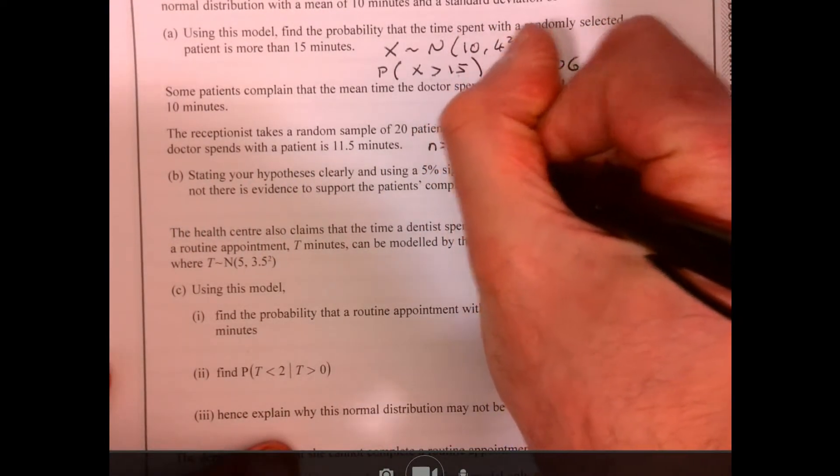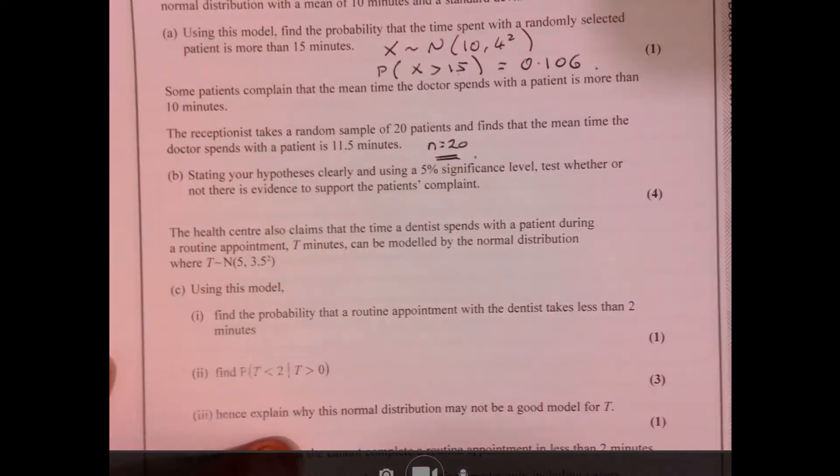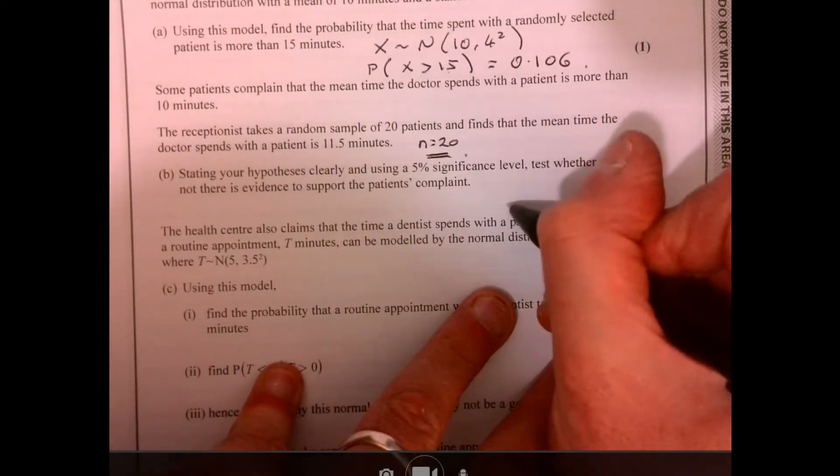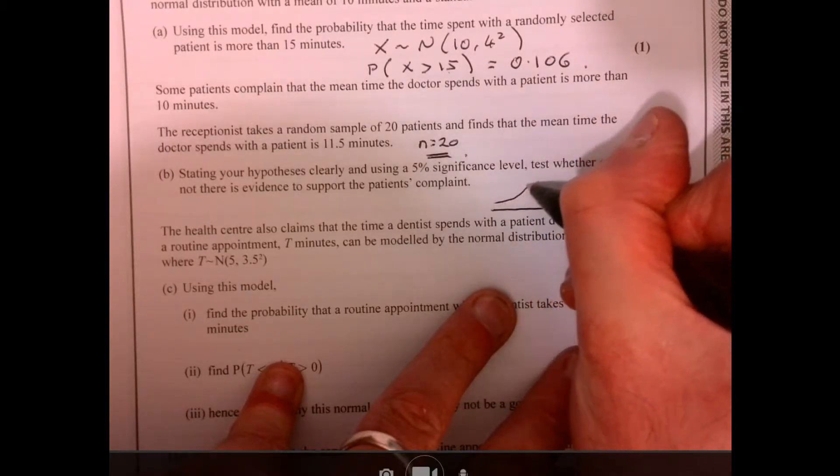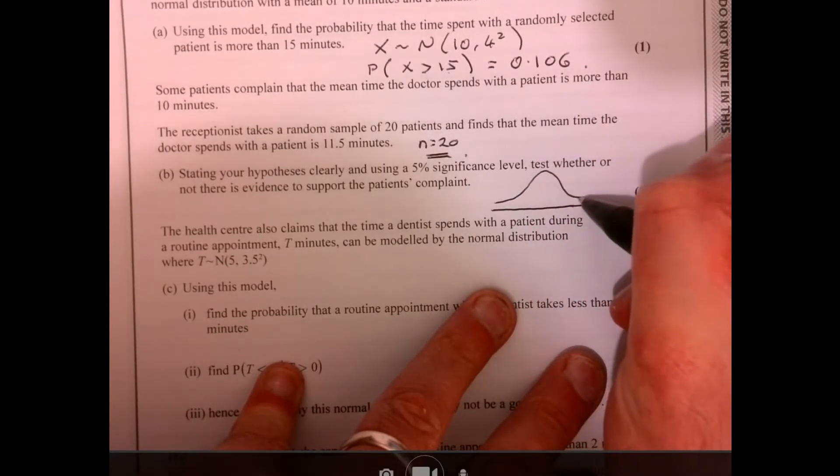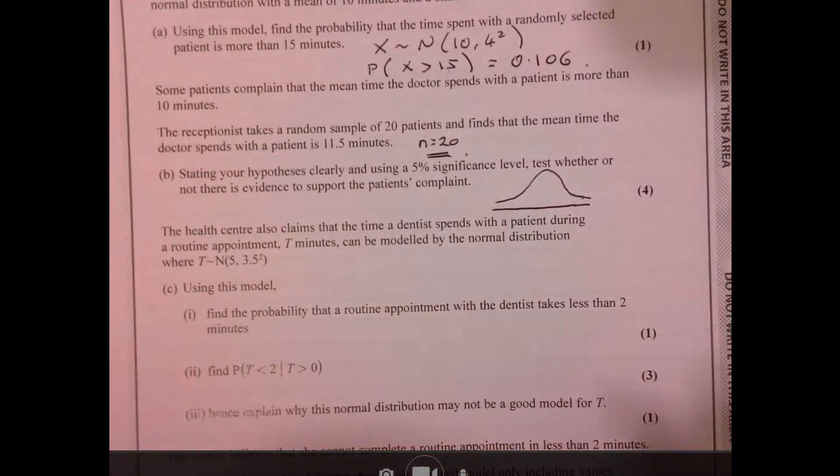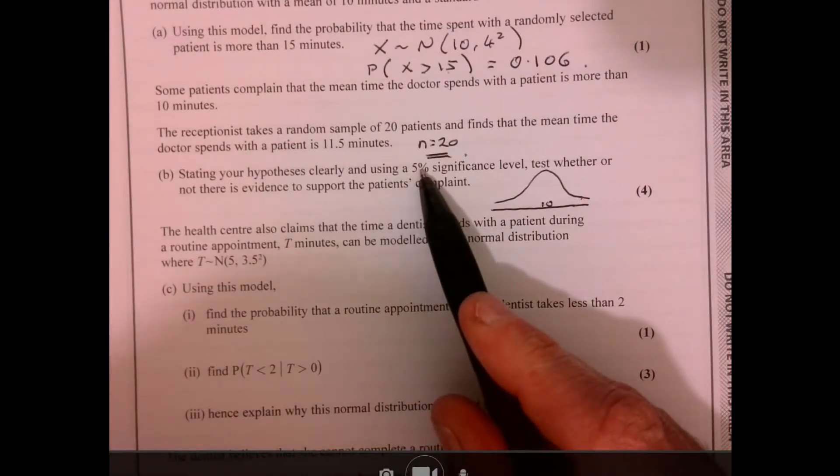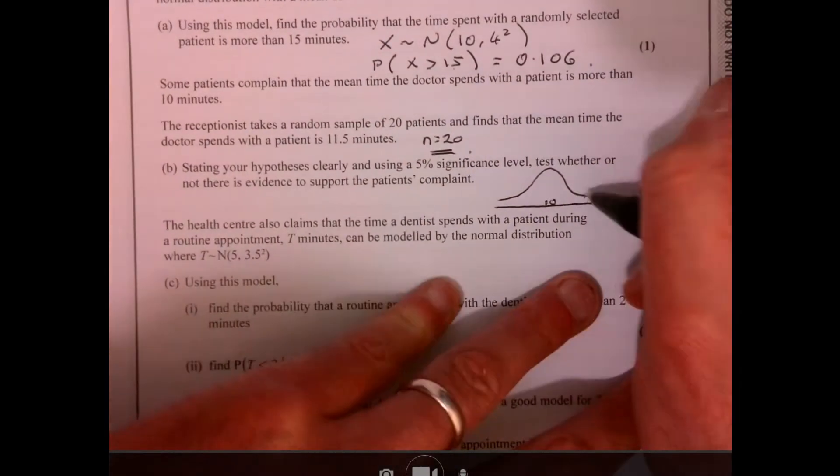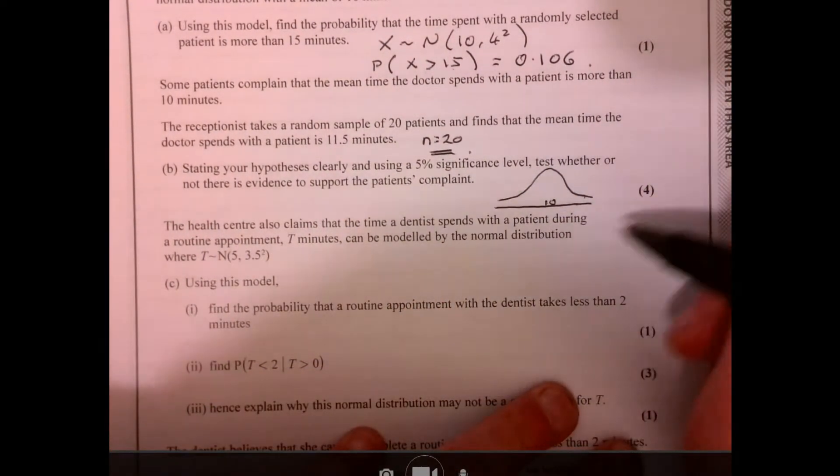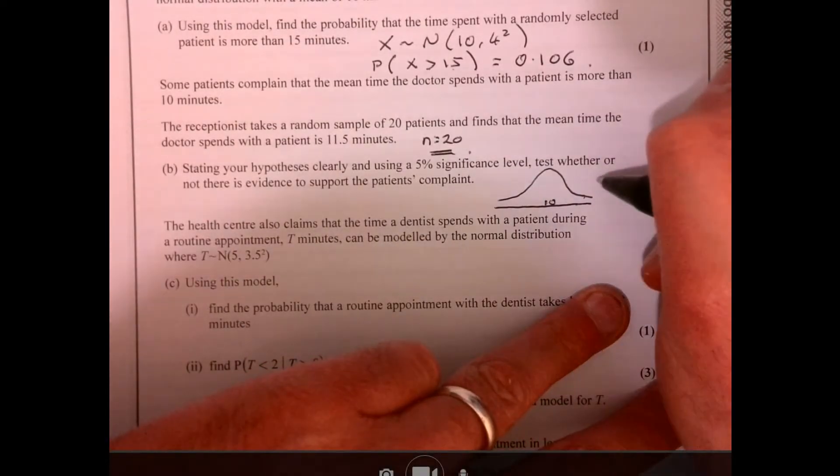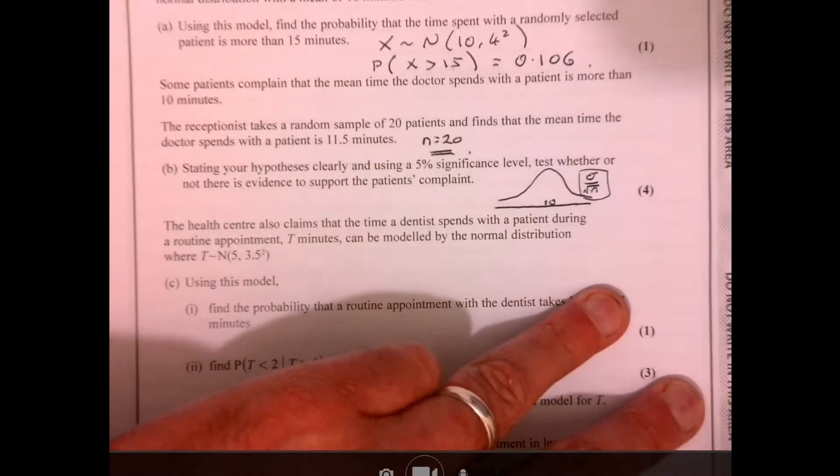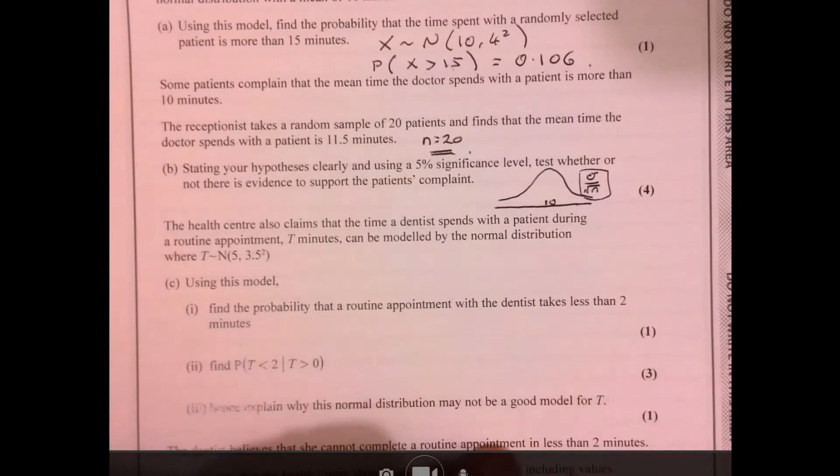So we've got N is 20. Now we've taken a sample. And that sample has given us a mean. We've got a mean of 10. Now remember we're using something called the standard error here. Because we've got the mean of a sample of 20. So that actually affects the standard deviation. And that's worked out as standard deviation divided by root N. That's like the key bit to know when you're working this out.